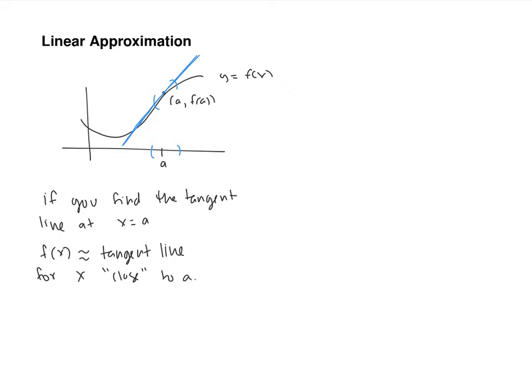It will be different in different places. The tangent line at five is close to the function near five, so you can use it to estimate the function near five. But if you care about A equals 100, you've got to find a different tangent line because behavior may be very different there. In Calculus 2, you'll learn to approximate a function using a polynomial — you add more terms and it gets more accurate more quickly.